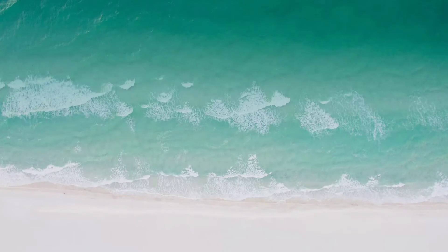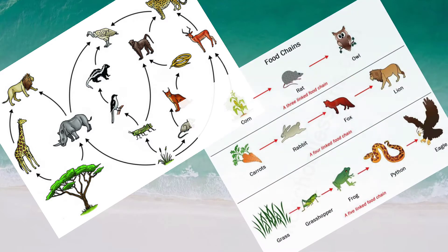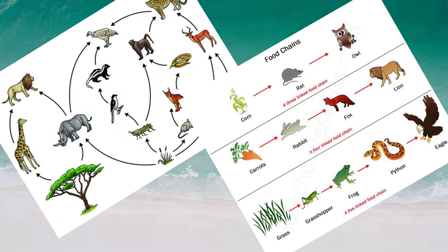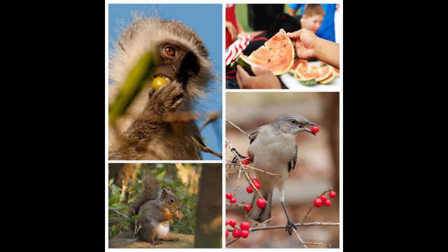All animals depend on plants and on each other for food. This connection between them for food forms the food chain in the environment. The loss of any animal or plant from this chain will lead to another animal dying, causing an imbalance in nature.